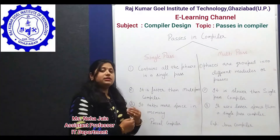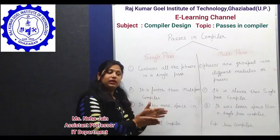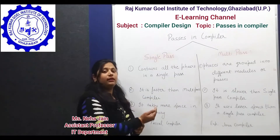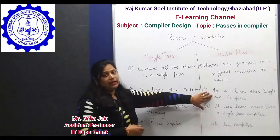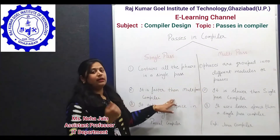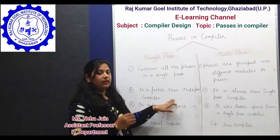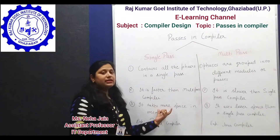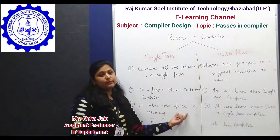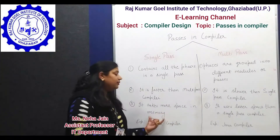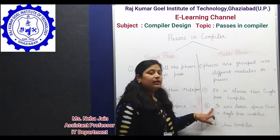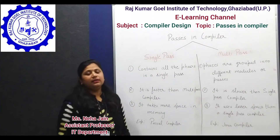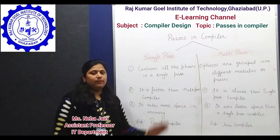Because the multi-pass compiler has to read from and write to intermediate files, this is why the multi-pass compiler is comparatively slightly slower. The second difference is that the single-pass compiler takes more space in memory, while the multi-pass compiler uses lesser memory space than the single-pass compiler.